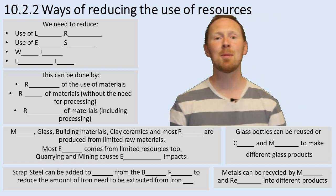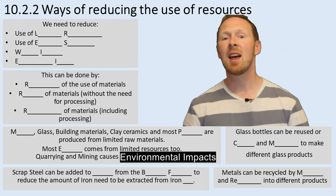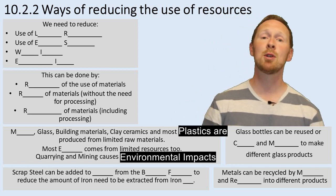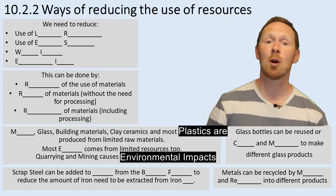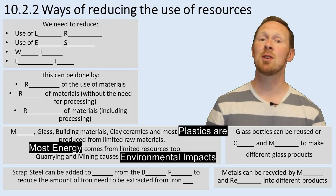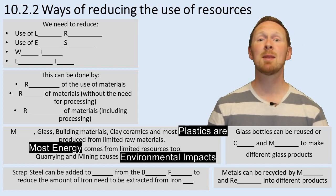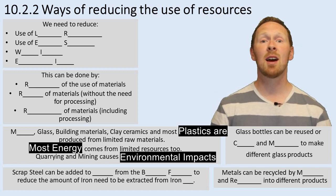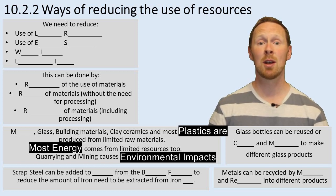So what are we talking about? Well, metals, glass, building materials, clays, ceramics — most plastics are produced from limited resources. Most energy comes from limited resources too. So if we reduce these things and reduce the amount of energy we need, we're having a positive impact on reducing the amount of resources that we're using.